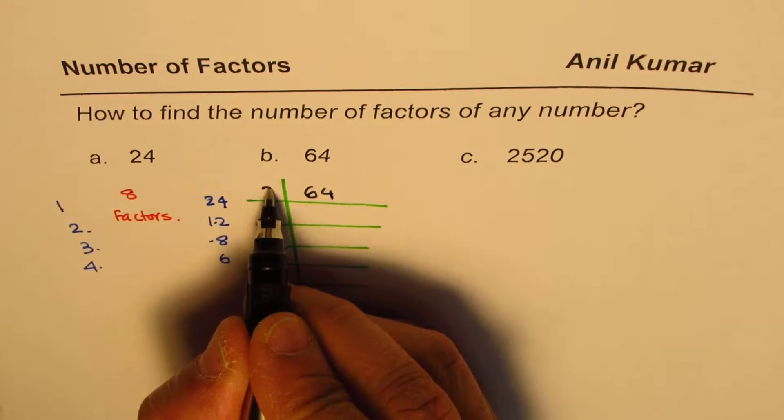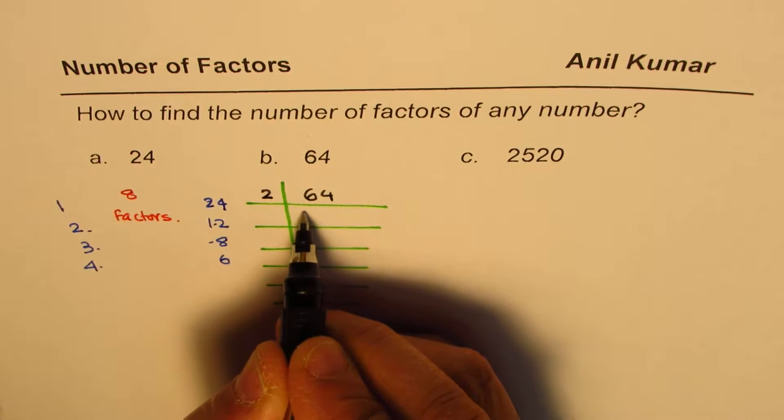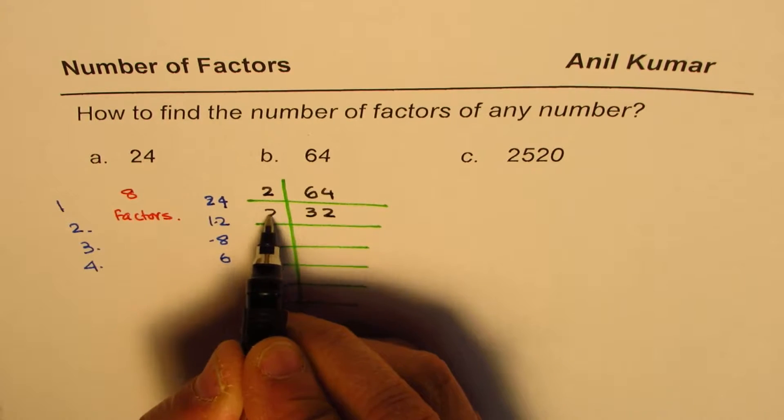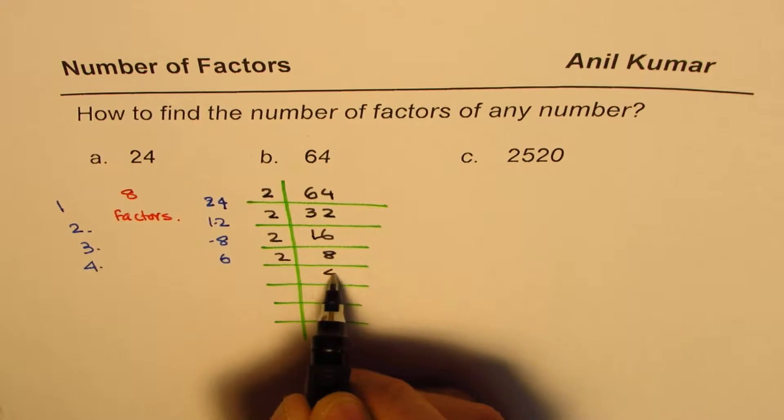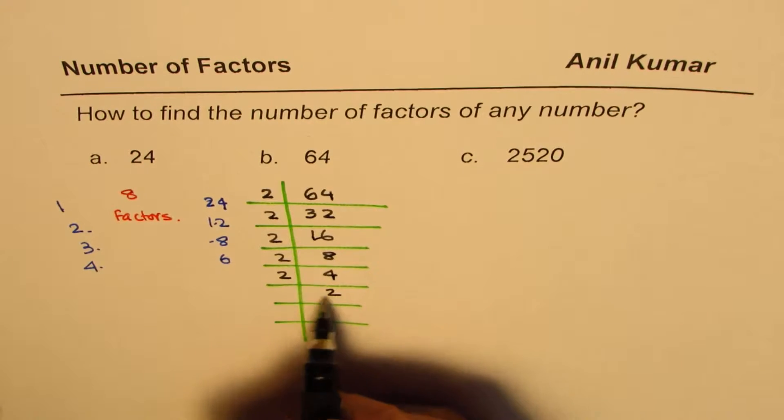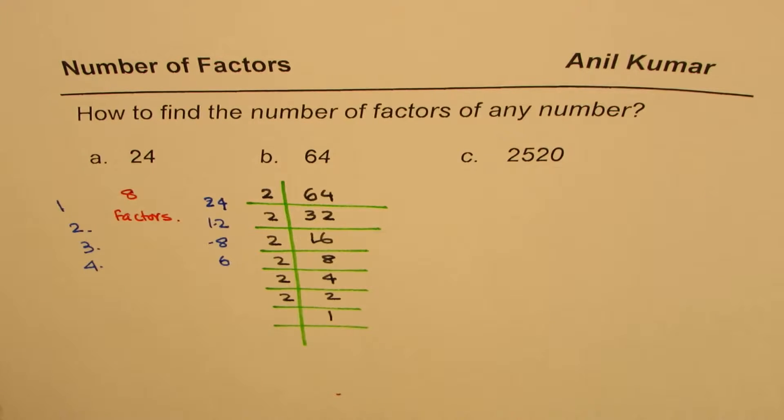Of course, not 1, but we can do 2. So when I divide 64 by 2, I get 32, then again by 2 gives me 16, again by 2 gives me 8, again by 2, 4, and this 2, and then again by 2, 1. Good job.